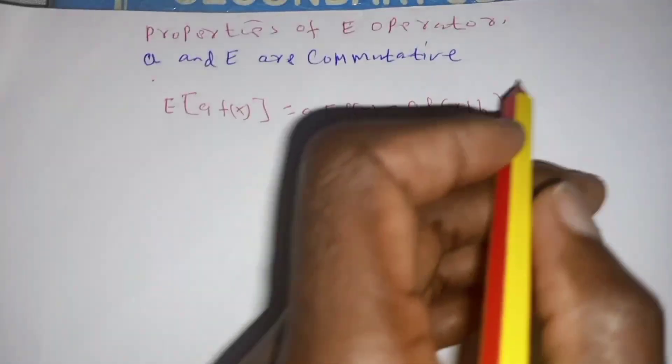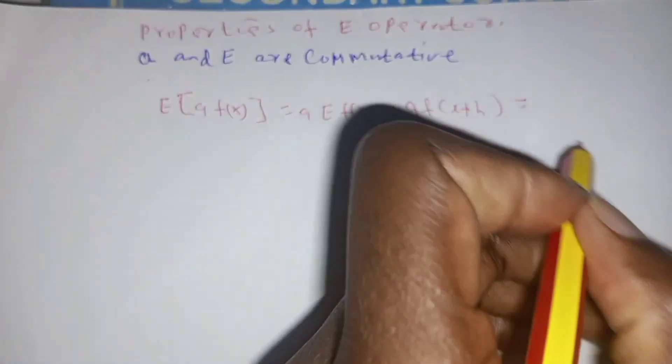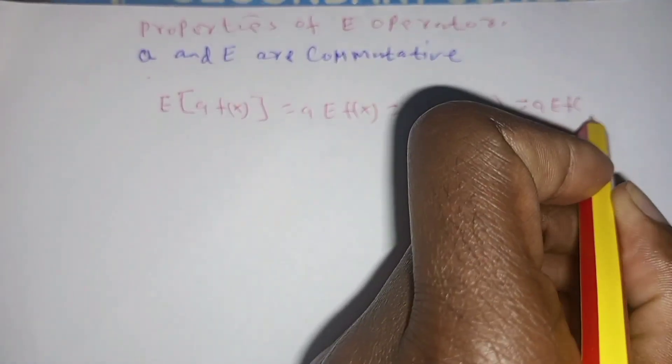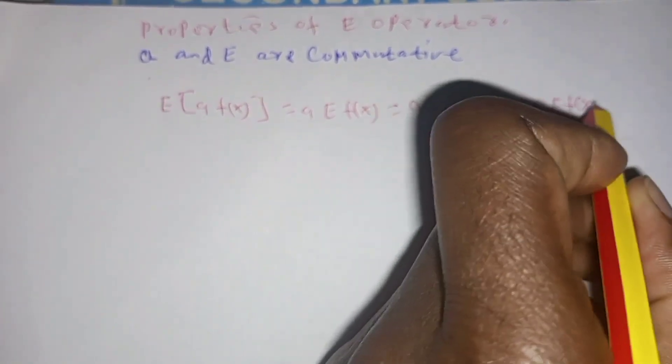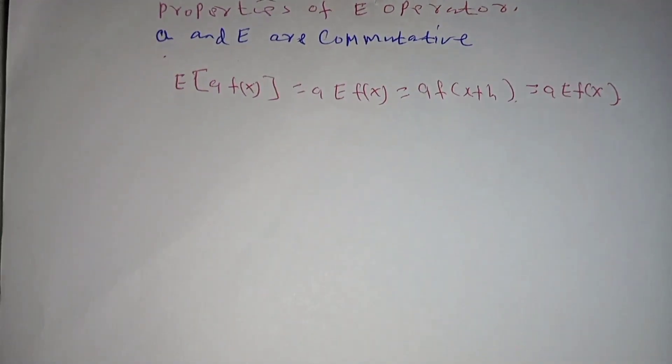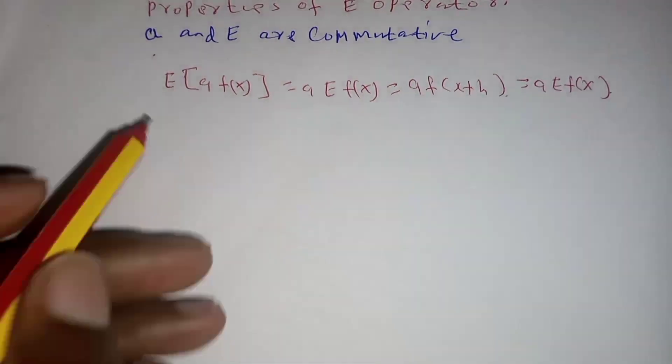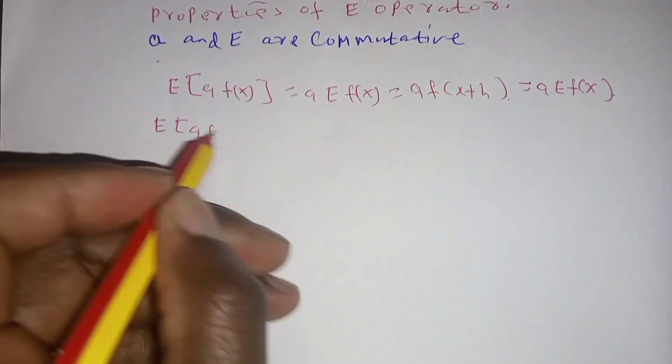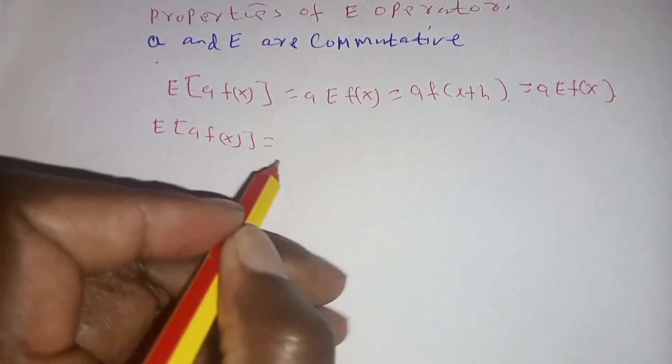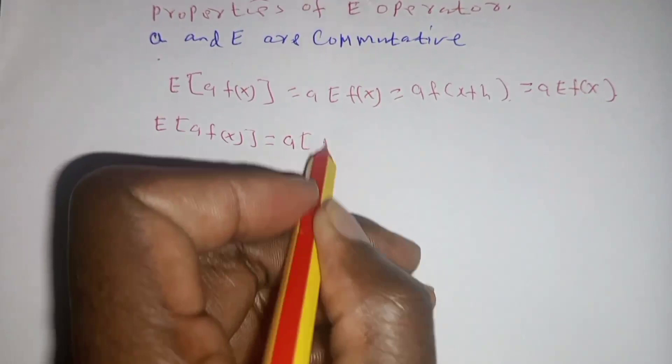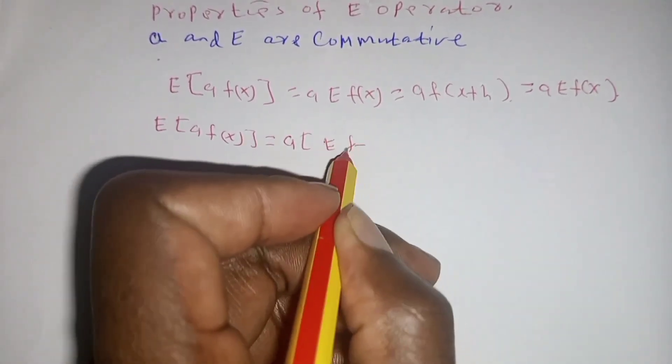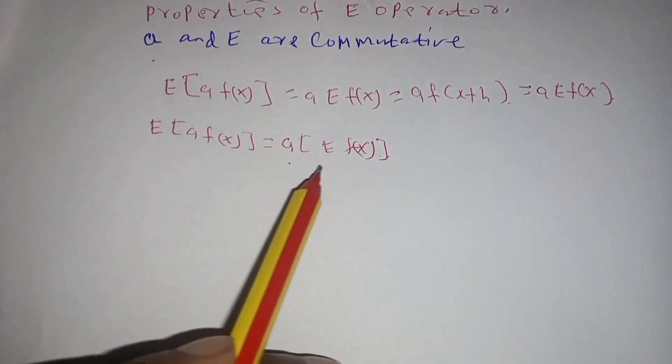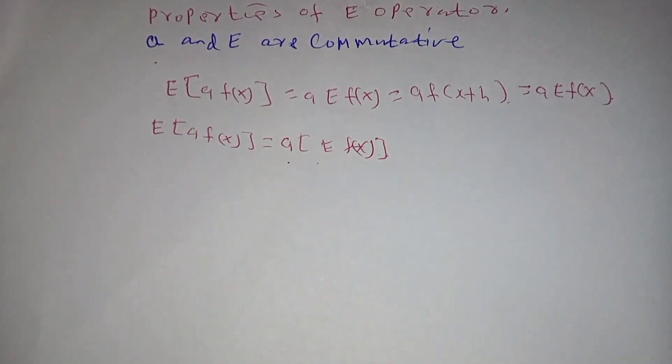Which we can write as A times E of f of x. So clearly, that shows you that E of constant A of f of x is the same as A bracket E of f of x. Meaning that constant A and the shift operator are commutative.